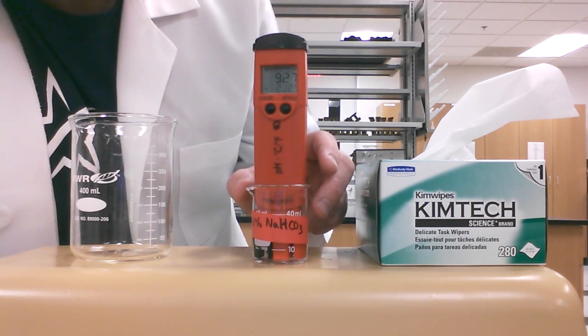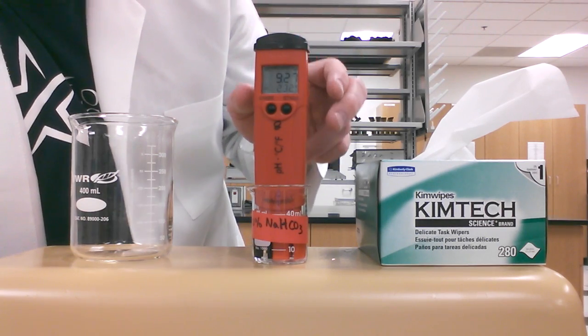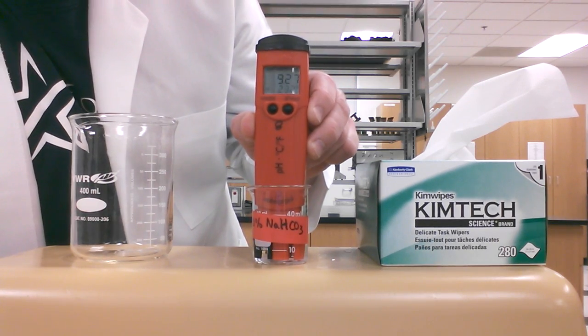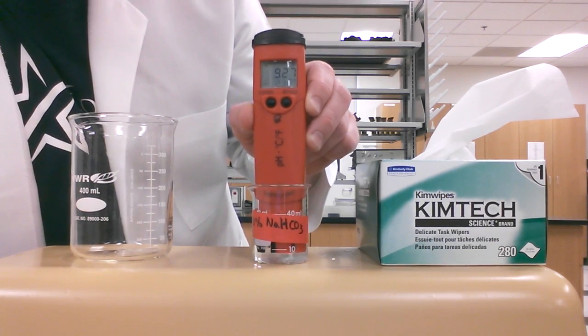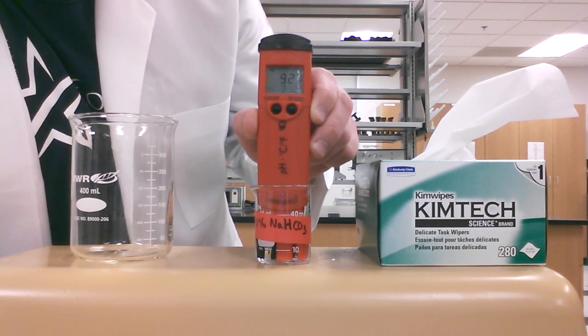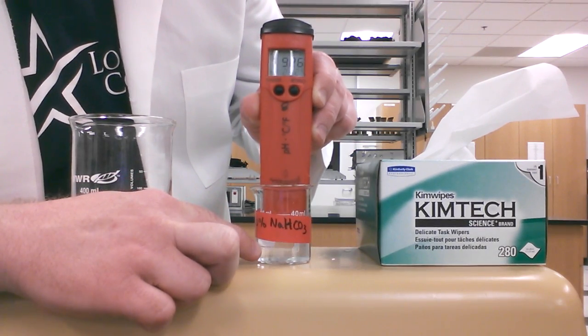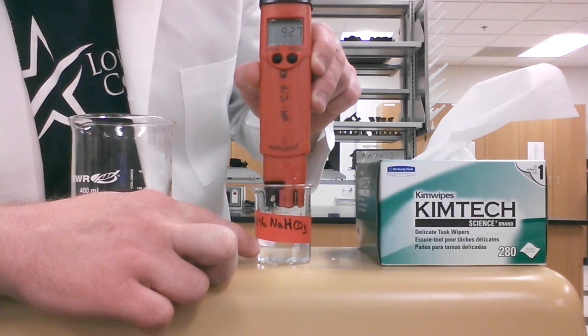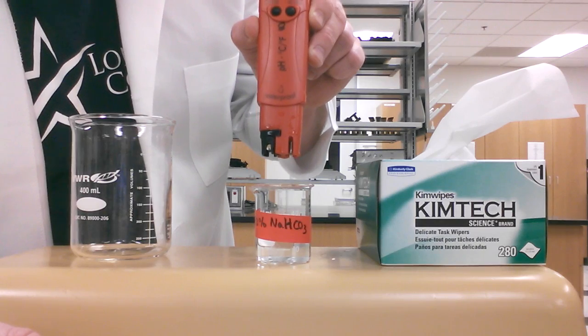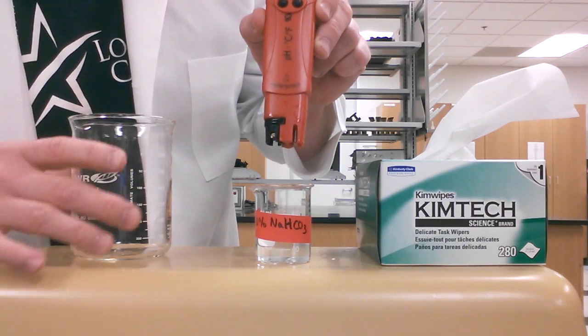Anytime that you're going to change solutions or put the pH meter back onto its cap, we're going to have to rinse the electrode because we don't want to keep any of the things that are inside this solution. We don't want any of that stuff to be stuck on the electrode because that's going to wear it down and make us not able to use it in the future.